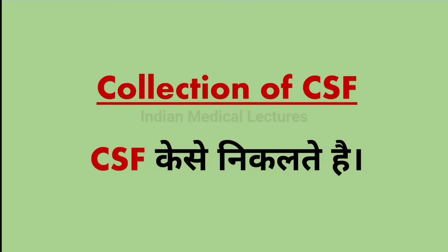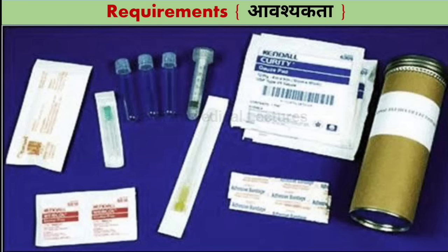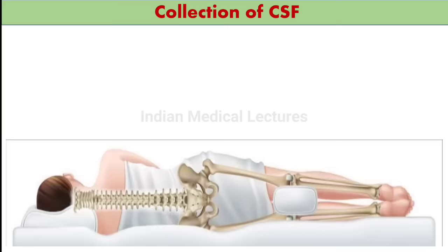Now, the most important part: how do we collect CSF? There are some requirements. We need one needle — CSF's needle is a little bigger. We need three containers — one, two, three. We need bandage and sterilizer. These are the basic requirements needed during CSF collection.